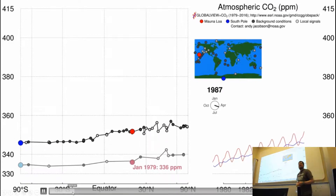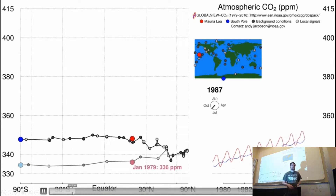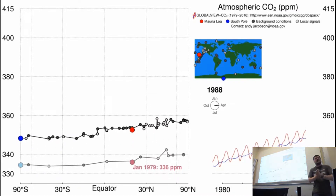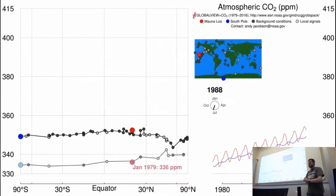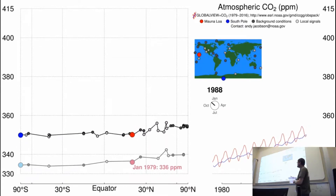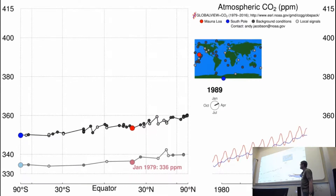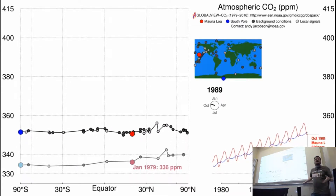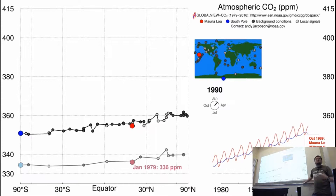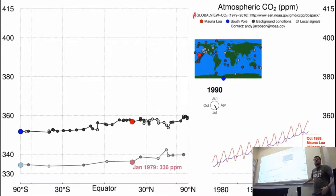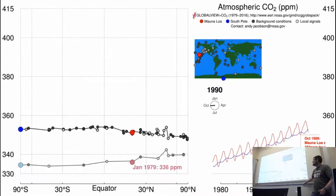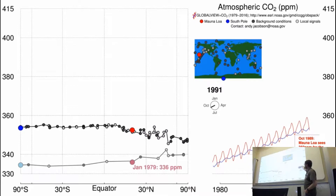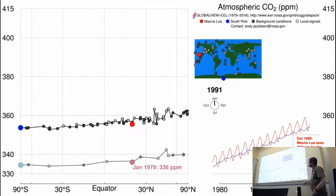So we'll start today's lecture. Today's lecture is going to be about the carbon cycle. One of the things we're going to be going through is basically explaining this graph and explaining why CO2 is rising through time and some of the details of these ups and downs.